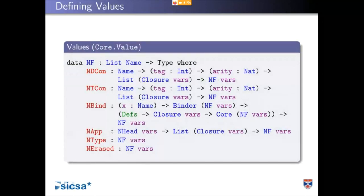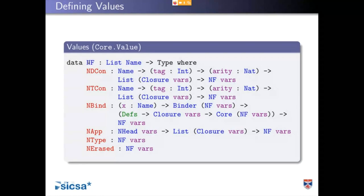Everything we do when we get into conversion checking and unification is going to be comparing values. Values are represented as a head normal form of a term. I've called the data type NF for normal form — though this is actually a head normal form.